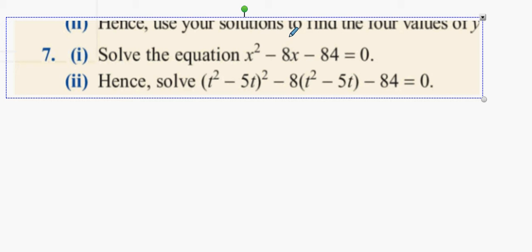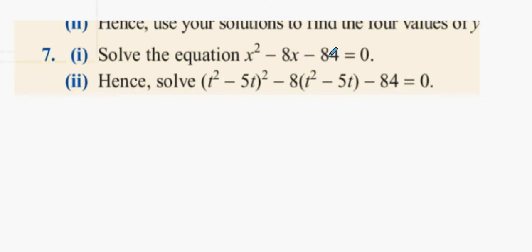Alright guys, first things first, the reference number is minus 84. You multiply the number that comes from the x squared by the last number. We're going to get minus 84.